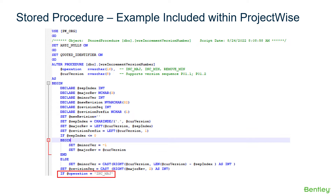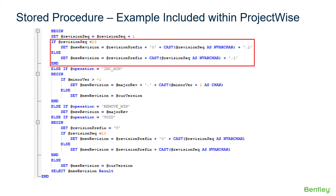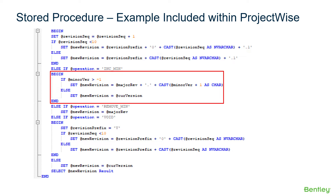If the operation is equal to Increment Major, the code sets the next sequence with a plus one. It checks to see if the sequence number is less than two digits; if it is, it prepends a zero. It automatically adds a decimal one to the ending version number. If we increment the minor number by passing INC_MIN, it goes through the same process, however incrementing the minor version number.